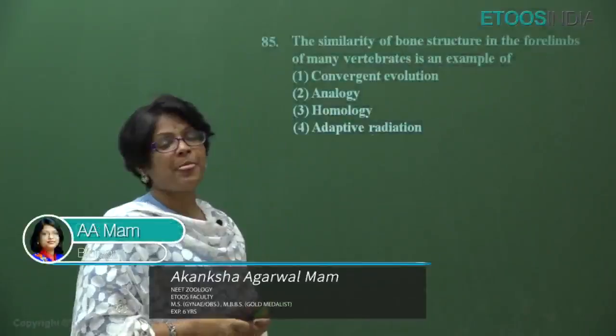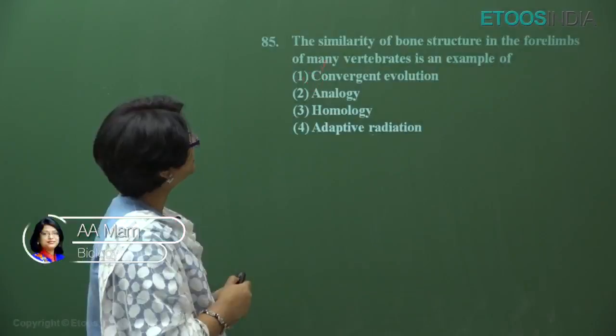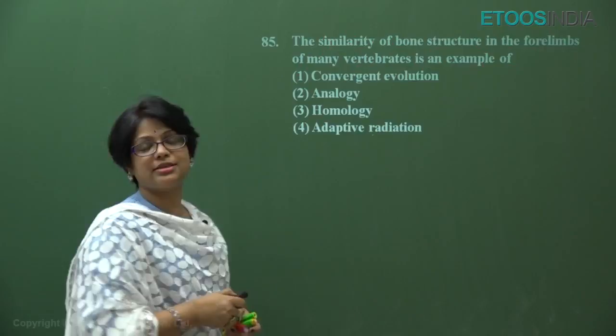Now let's see question code RR and NEET 2018, question number 85. It is from the evolution chapter in 12th class. The question asks: the similarity of bone structure in forelimbs of many vertebrates is an example of what.